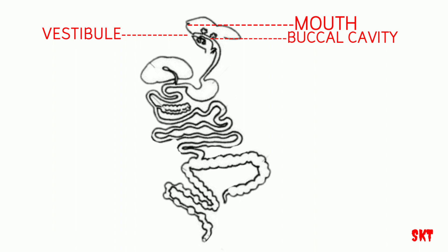The pharynx is a short and conical region where the food and air passages cross. The function of the pharynx as part of the digestive tract is to serve as a passage for food from the buccal cavity to the esophagus. The walls of the pharynx are drained by muscles which initiate swallowing movement through which food moves on.